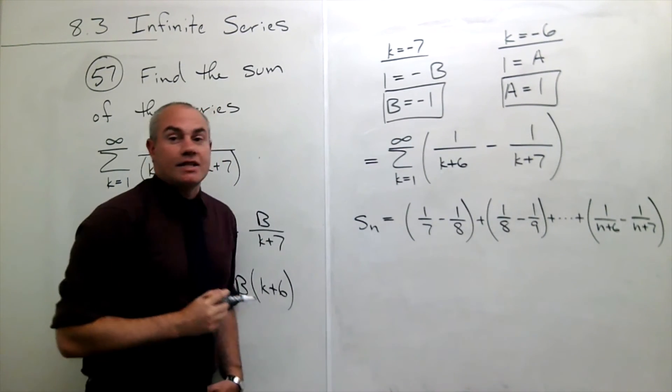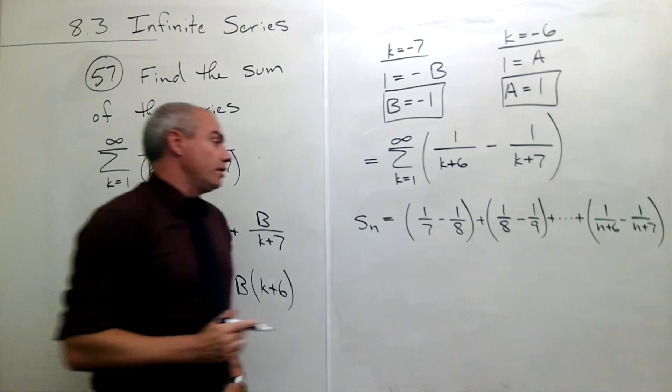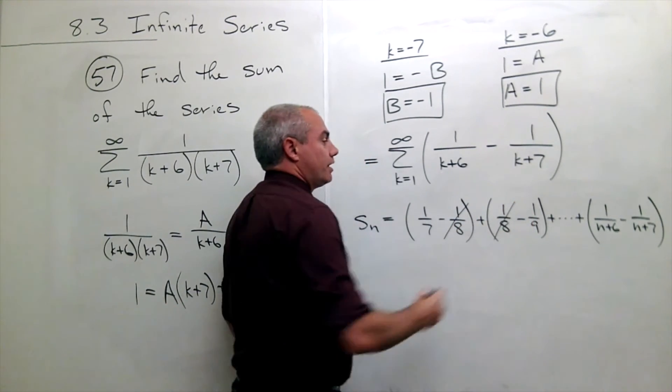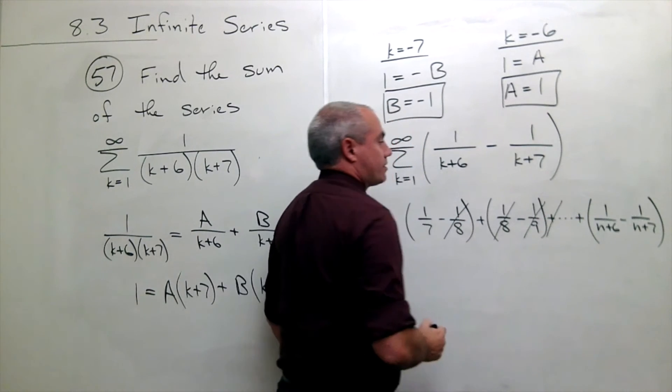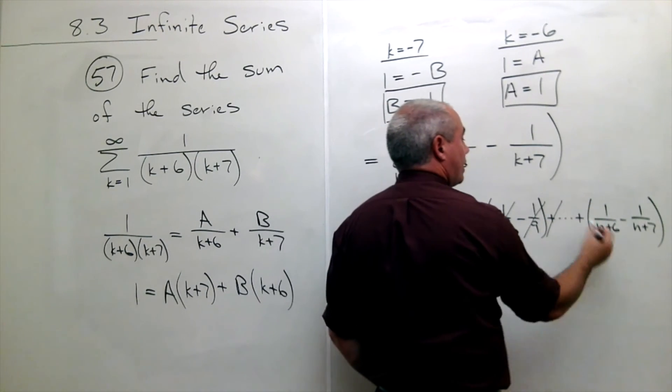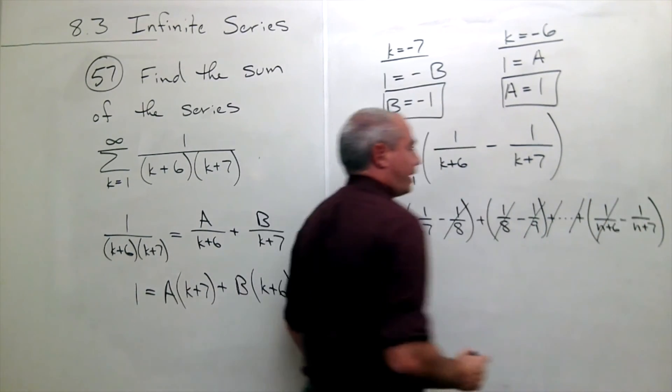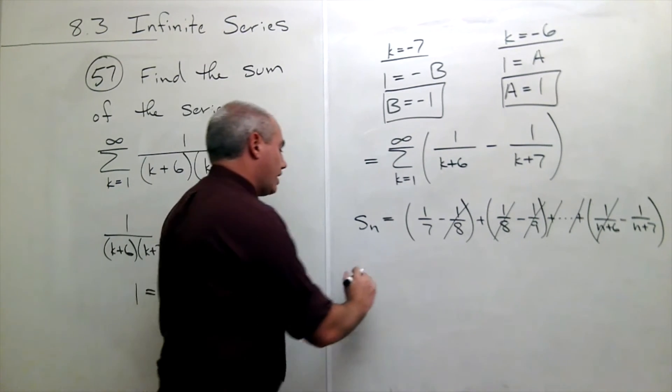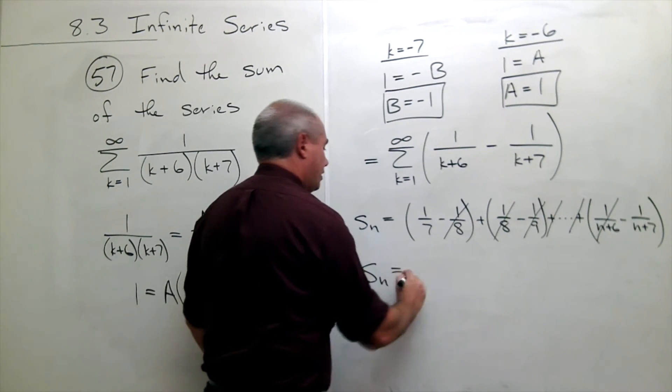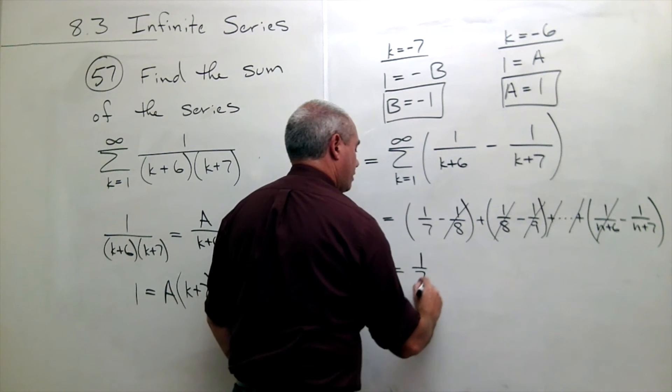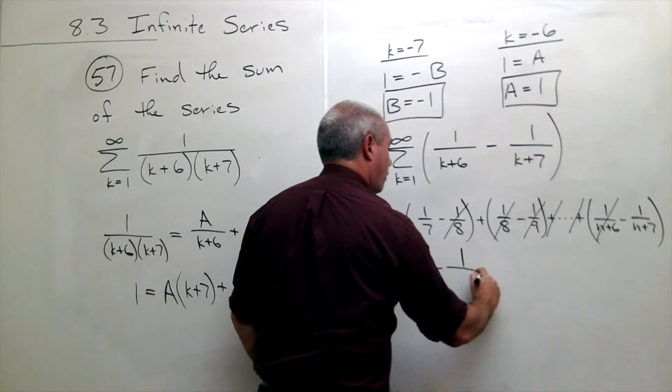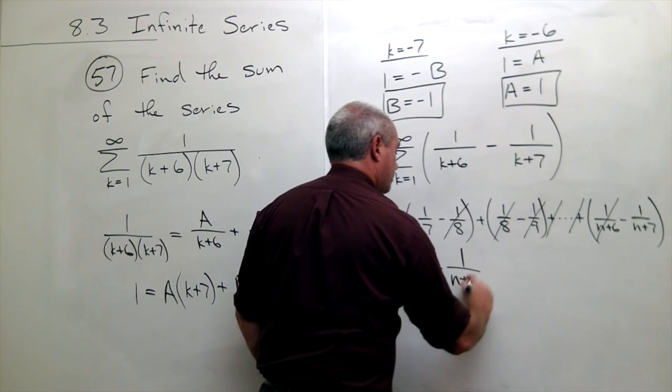And we see that things telescope. The negative 8th and the 8th cancel. The negative 9th and the 9th cancel. The negative 1 over (n plus 6) and the 1 over (n plus 6) cancel. And all I'm left with is s sub n equals 1/7 minus 1 over (n plus 7).